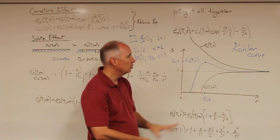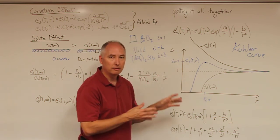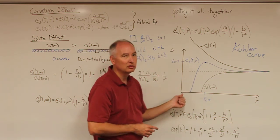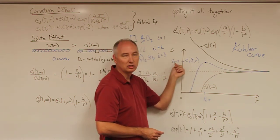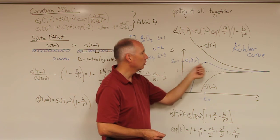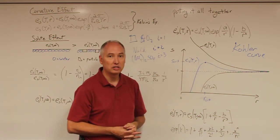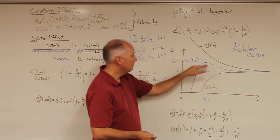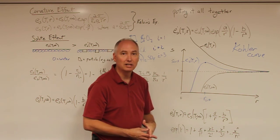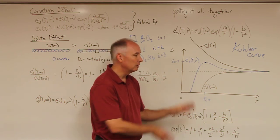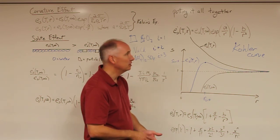We're going to do a lot of examples with the Köhler curve, trying to identify what types of particles have the smallest critical saturation ratio. If they have a small critical saturation ratio, then they are a very good cloud condensation nucleus. If they have a very high critical saturation ratio, then they are not a very good cloud condensation nucleus.